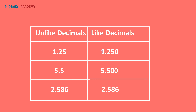To convert them into like decimals, we add zeros to the right of the decimal points. So, 1.250, 5.500, and 2.586 are now like decimals. We have now learnt the basics of decimals. In the next session, we will learn operations on decimals.